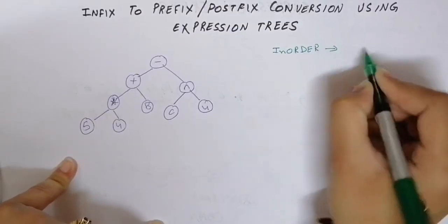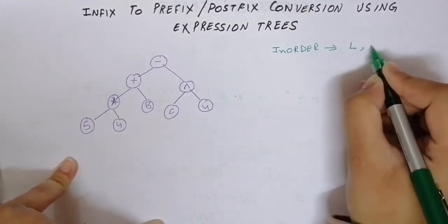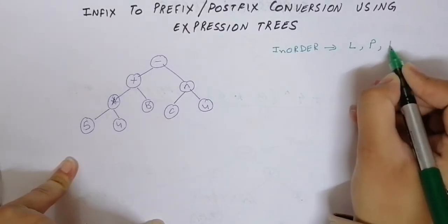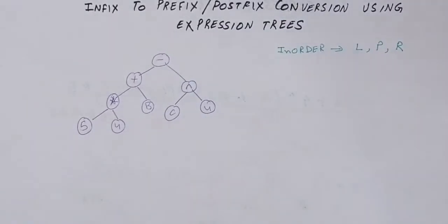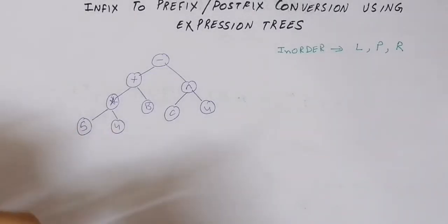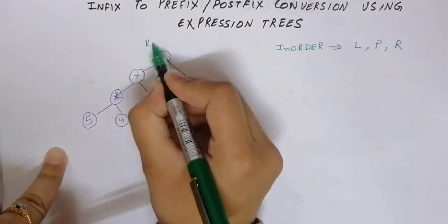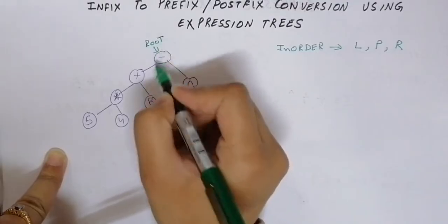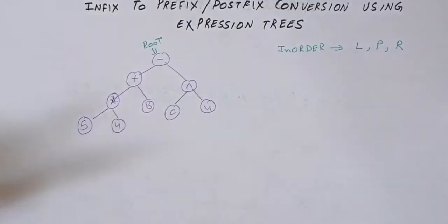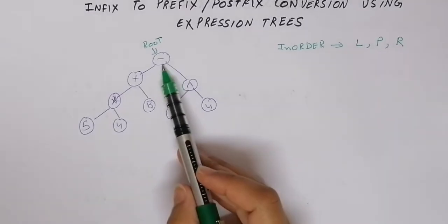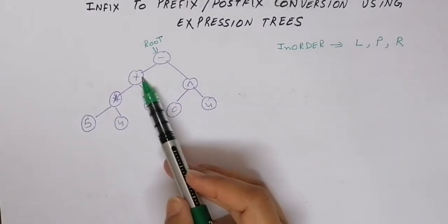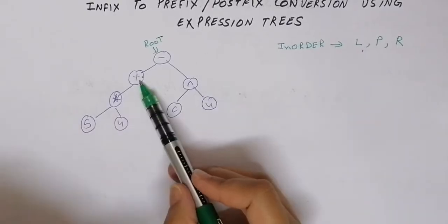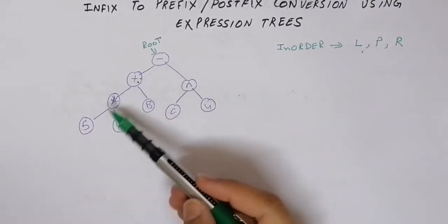In in-order traversal, we go to the left of the parent, then print the node itself, then move towards the right of the parent. Starting with this given tree, we begin at the root node — which is the starting point of the tree — and minus is the root node.